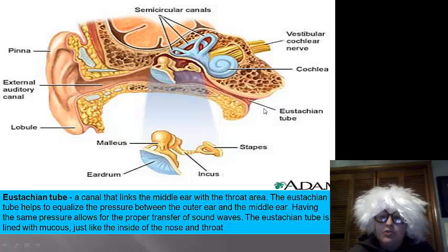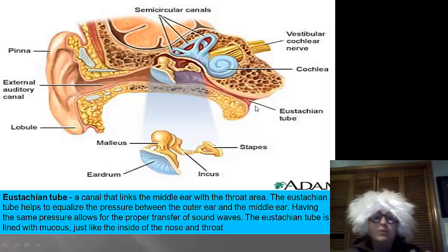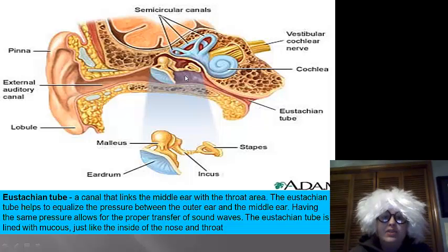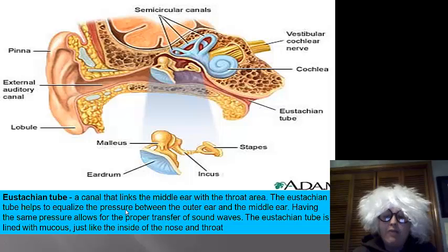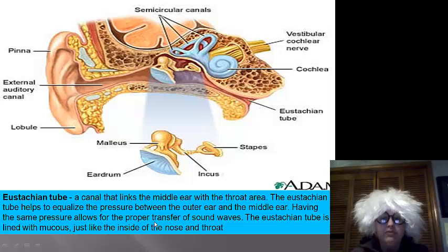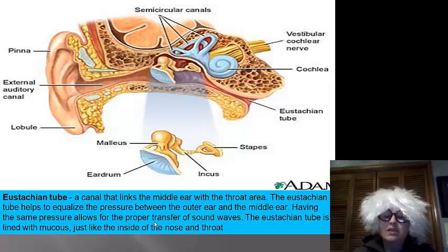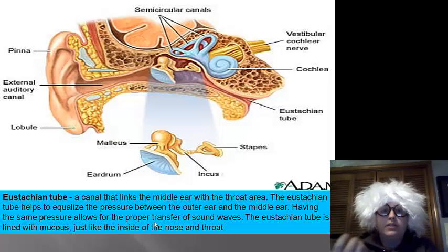The Eustachian tube keeps the pressure equalized within your eardrum. It is the canal that links the middle ear to the throat, and it helps equalize pressure between your inner ear and outer ear. Having the same pressure allows for proper transfer of the sound. The Eustachian tube is lined with mucus, like in your throat and nose, and can get clogged.